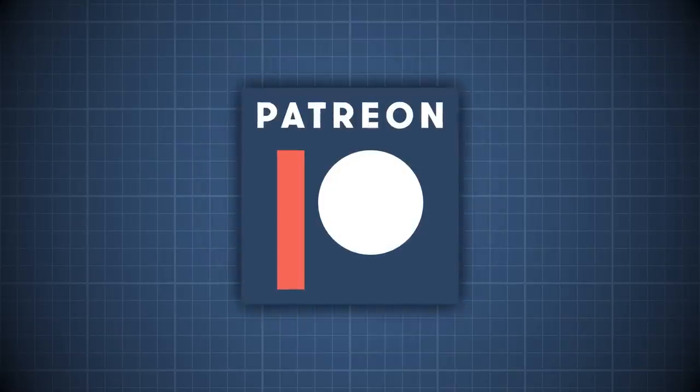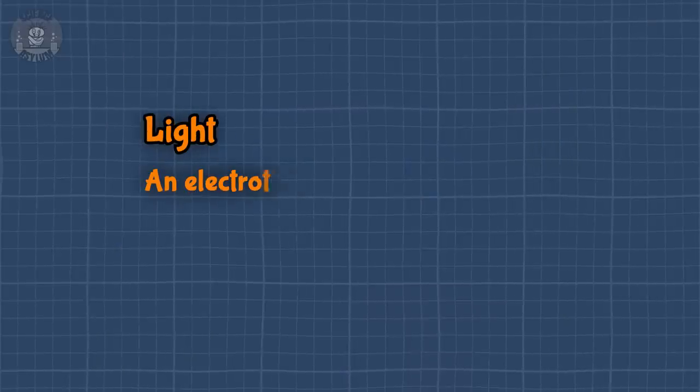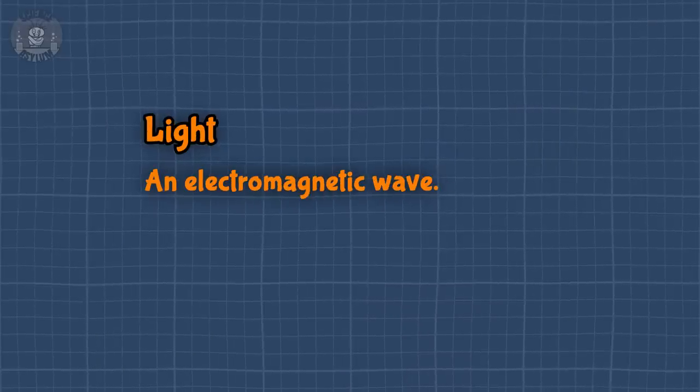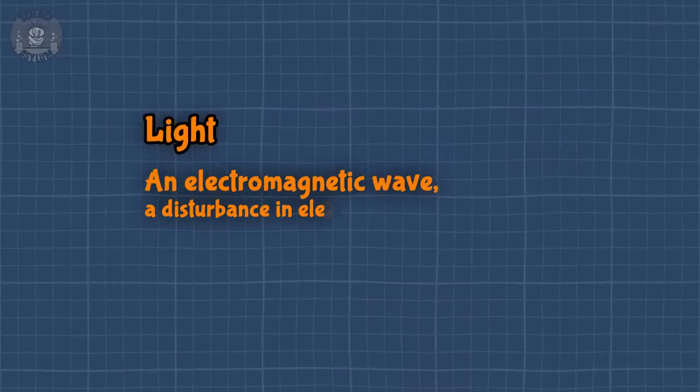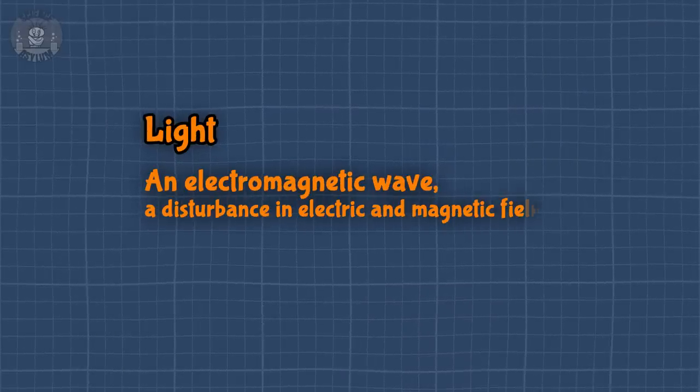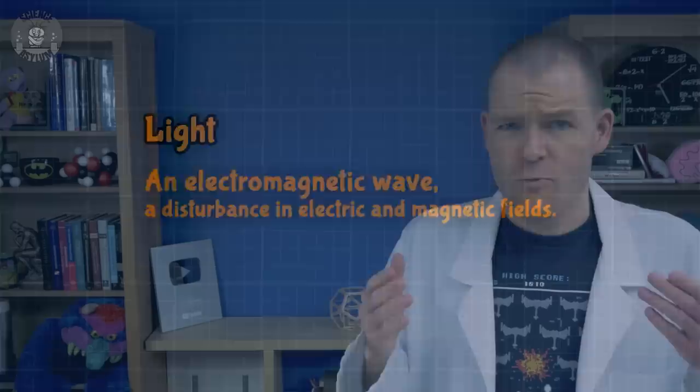This episode was made possible by generous supporters on Patreon. Hey Crazies, I've made a particular statement several times on this channel: light is an electromagnetic wave, a disturbance in electric and magnetic fields. Which begs the question — what does that even mean?